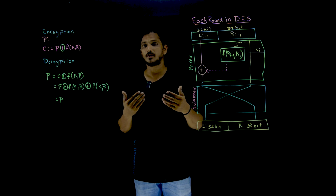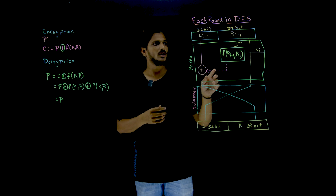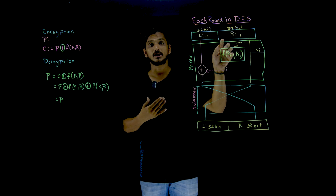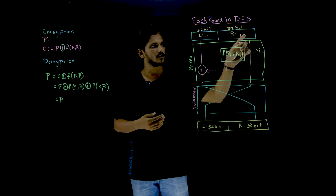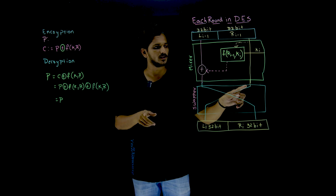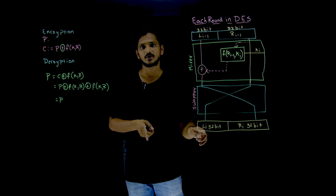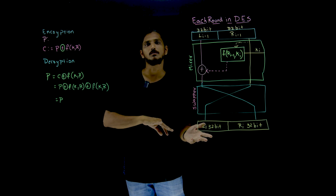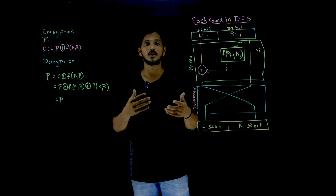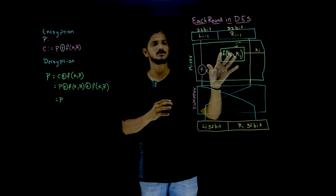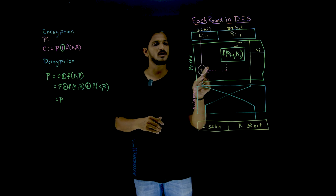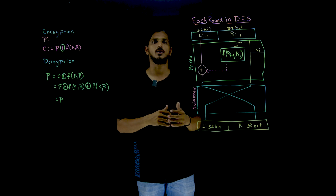An immediate doubt you may have: are we only encrypting half of the data? That is why the right-hand side is sent as input to the next round. In the next round, because of the swap, the right side moves to the left side and gets encrypted. So in this round the left side is encrypted; in the next round the right side gets encrypted. That is how encryption is done for all 64 bits.